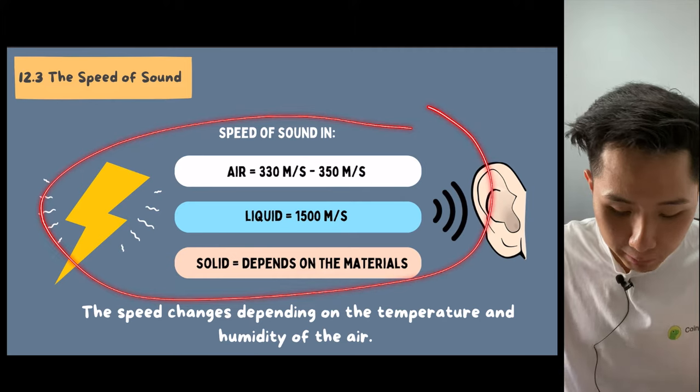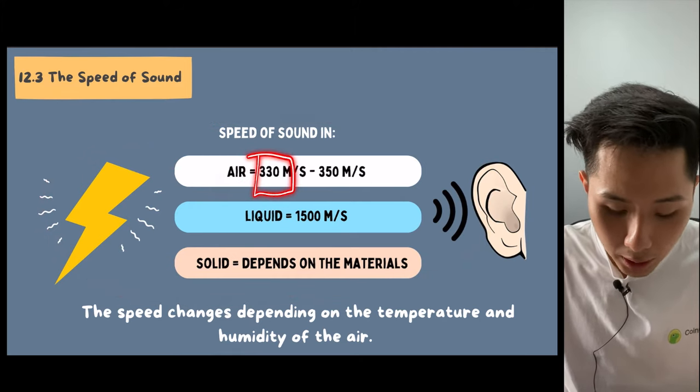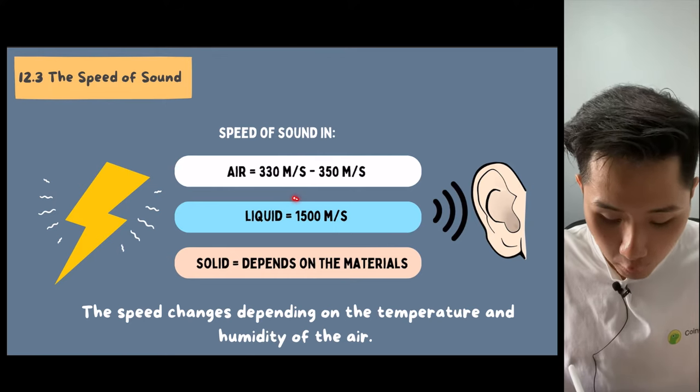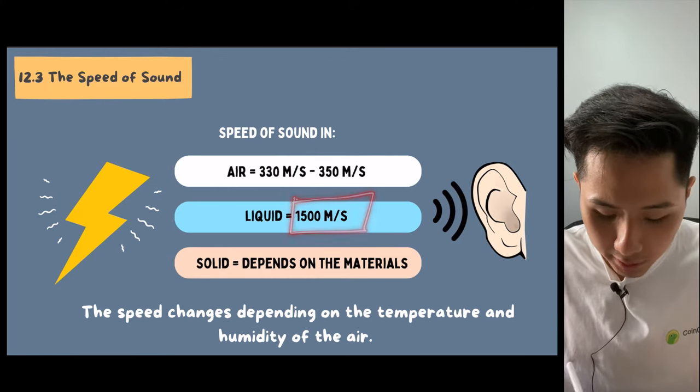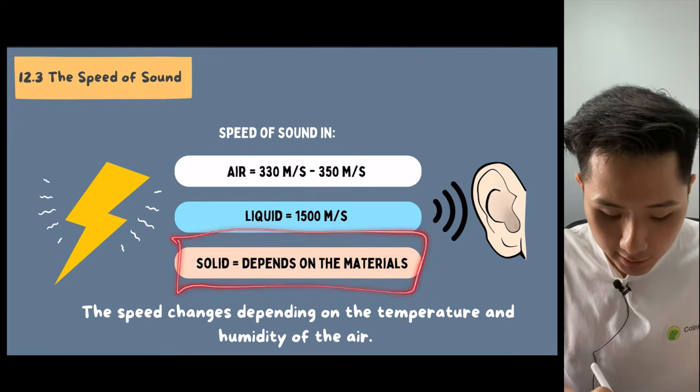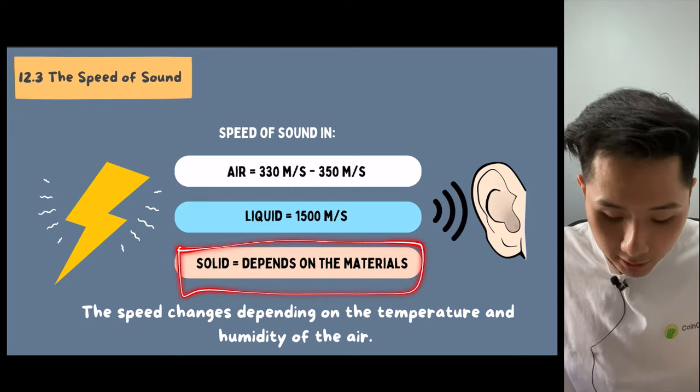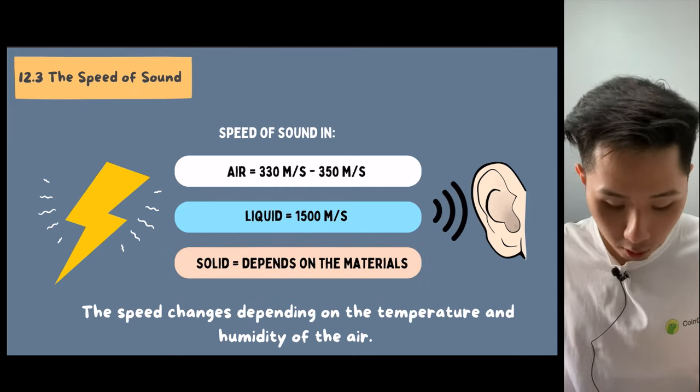These are the speed of sound in different mediums. In the air, it travels around 330 meters in one second. In liquid, it's a lot faster. It travels around 1500 meters in one second. And solid is usually quicker than in liquid, but for different types of solid, the speed of sound will also be different.